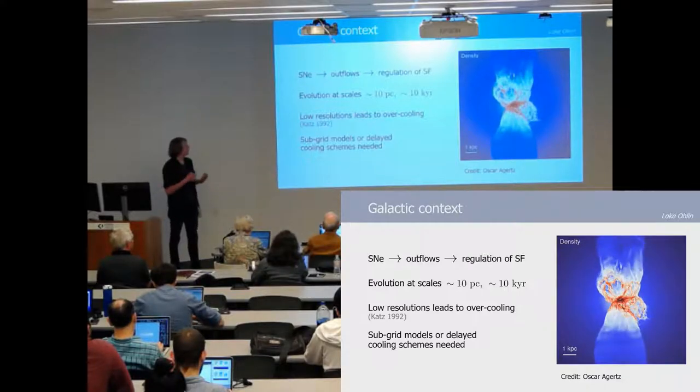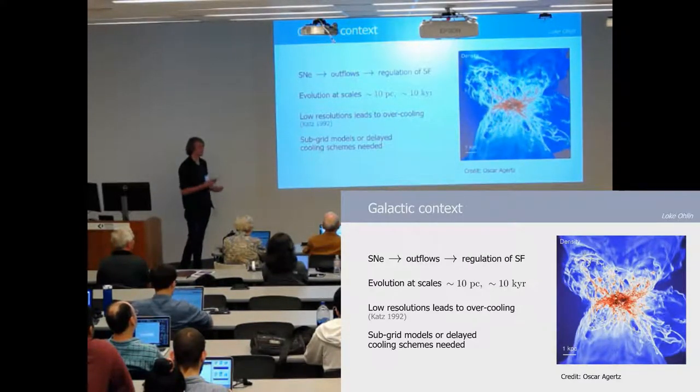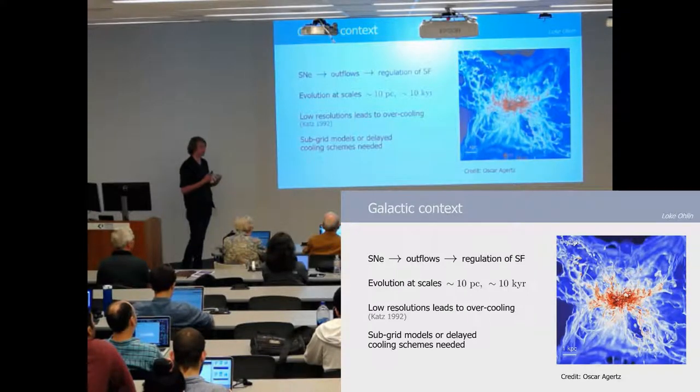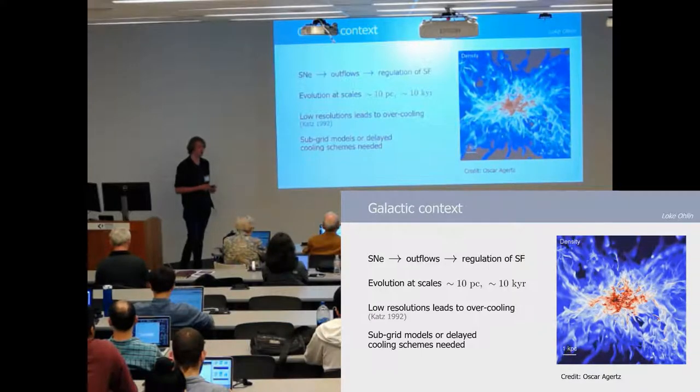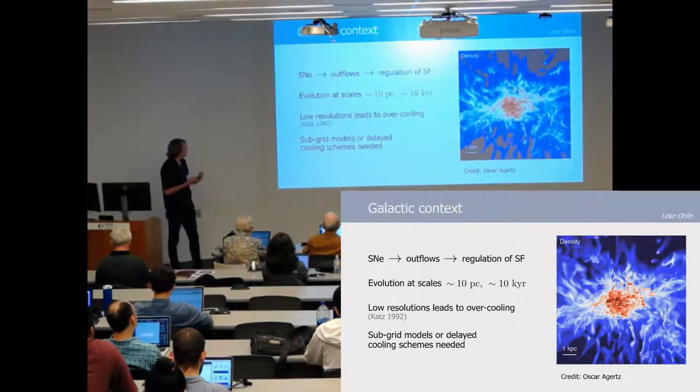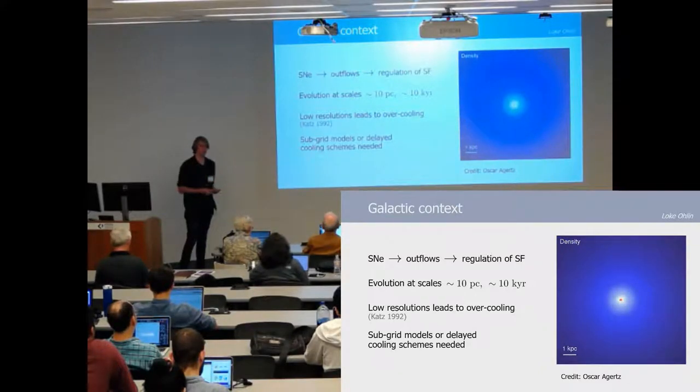However, the problem is that they evolve on scales of tens of parsecs and timescales of kiloYears, which can be hard or even impossible to capture. This is a problem since at low resolutions it will lead to overcooling of the supernova and underestimating the momentum injection.